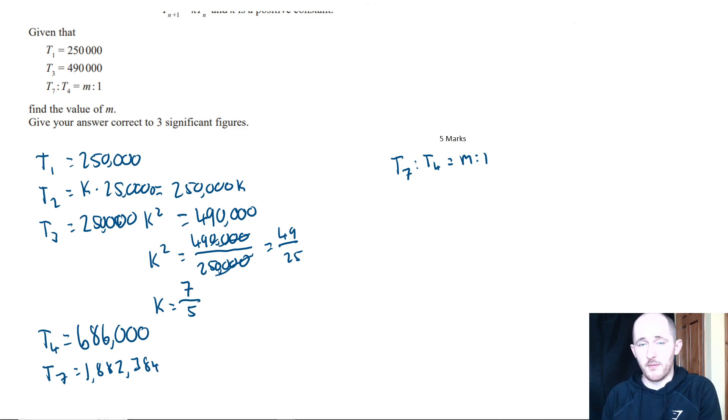Let's write out that number: 1,882,384. Now if we write this in the form of a ratio, we're going to have 1,882,384 to 686,000. In order to get this to 1, we divide both sides by 686,000 to make sure the right-hand side equals 1.